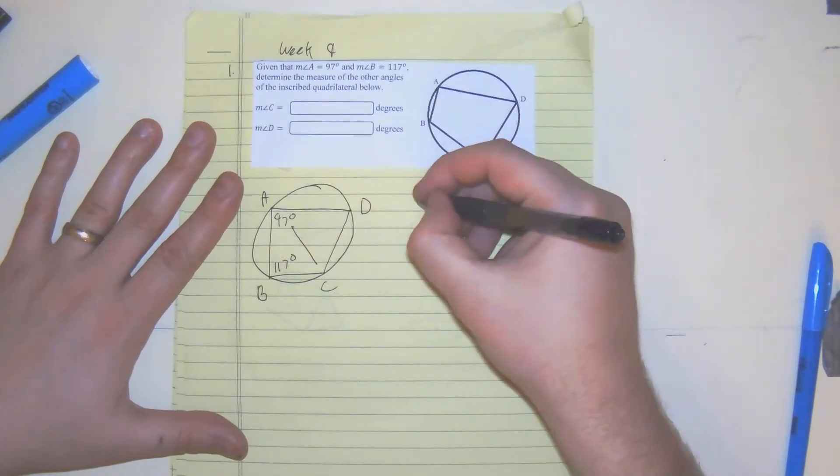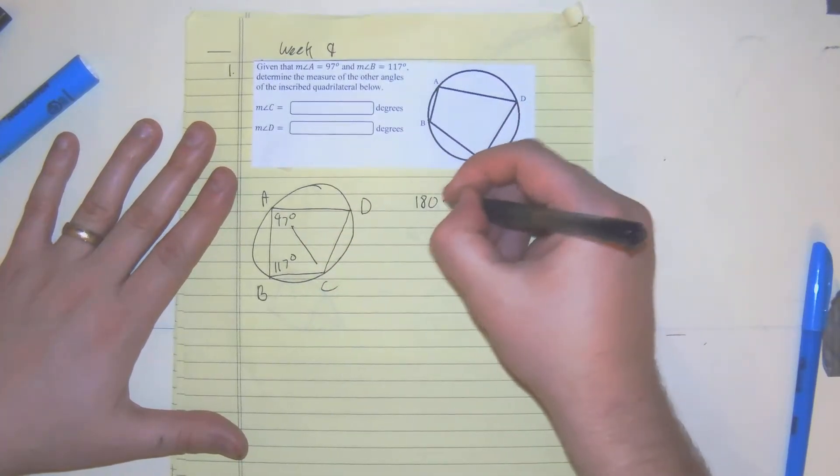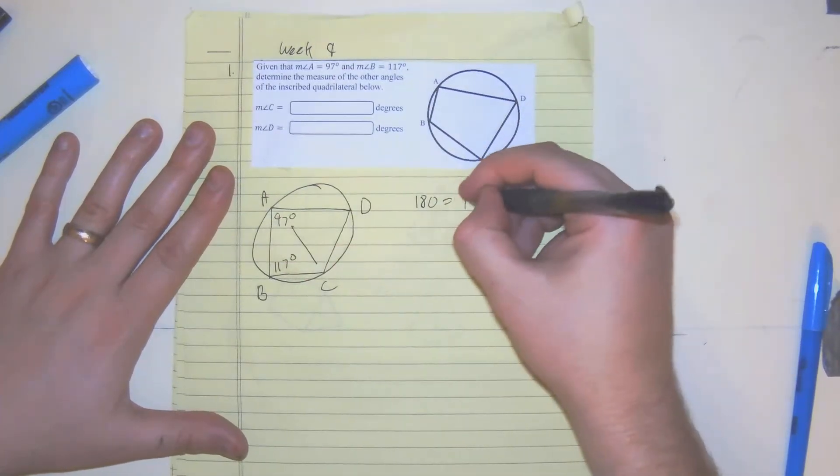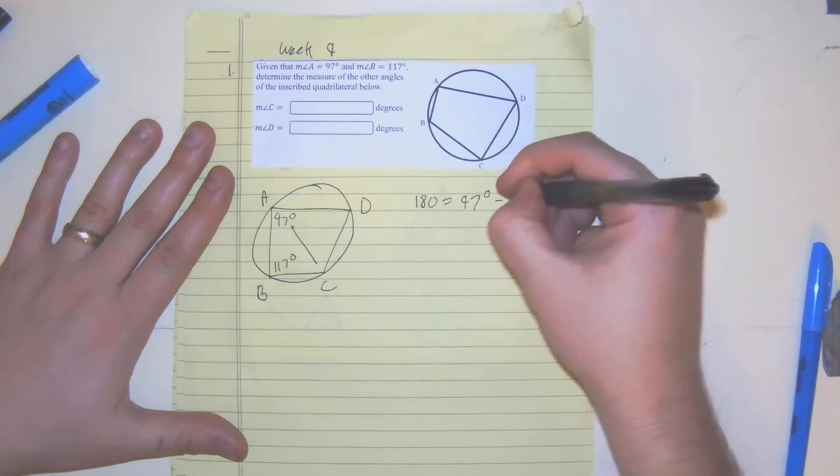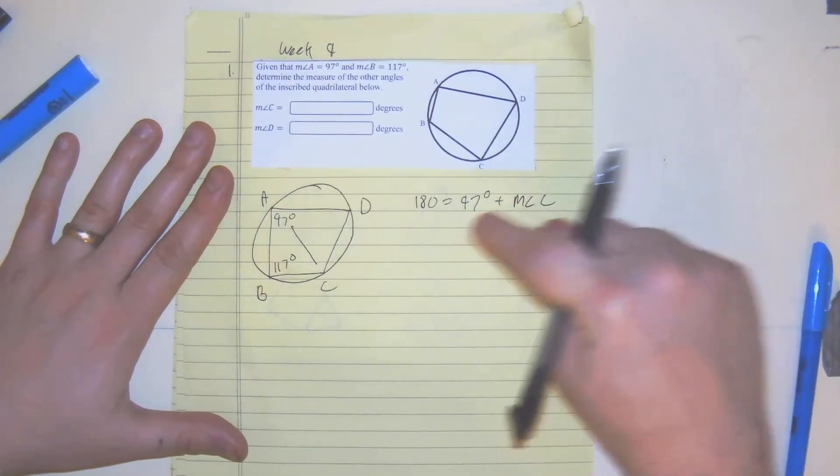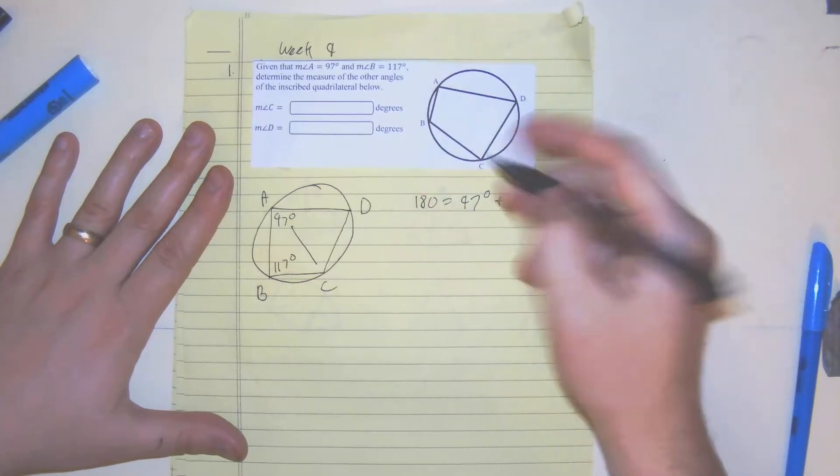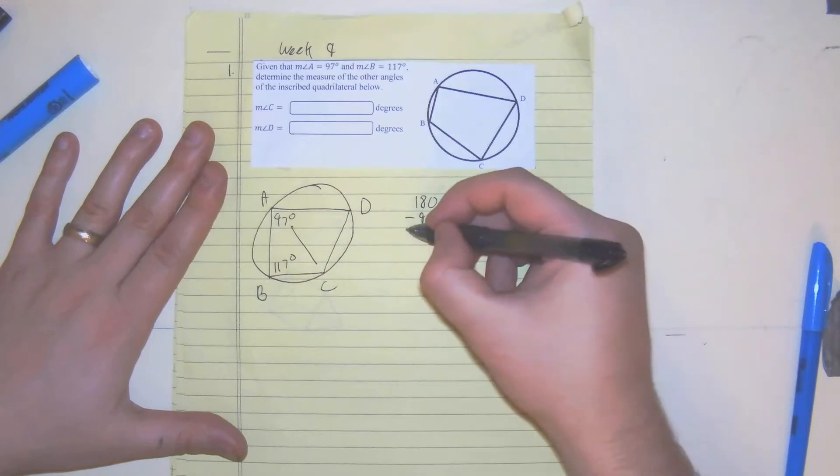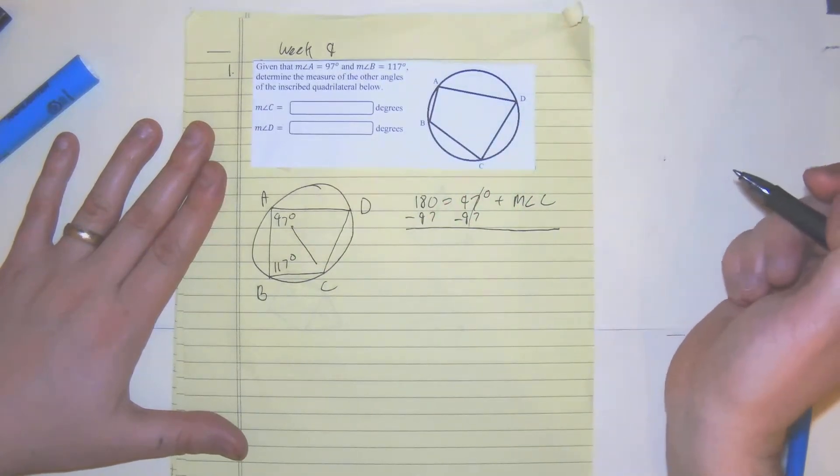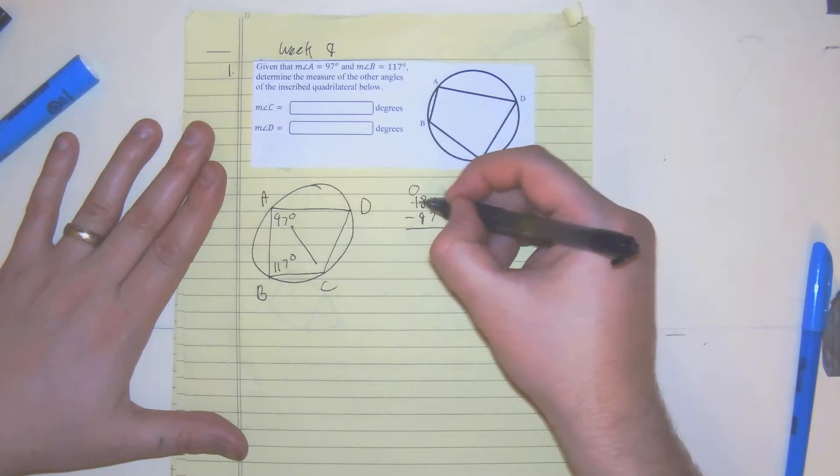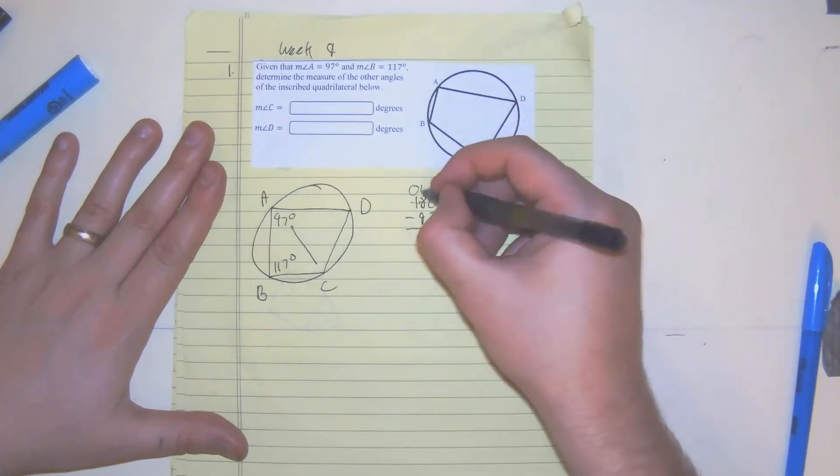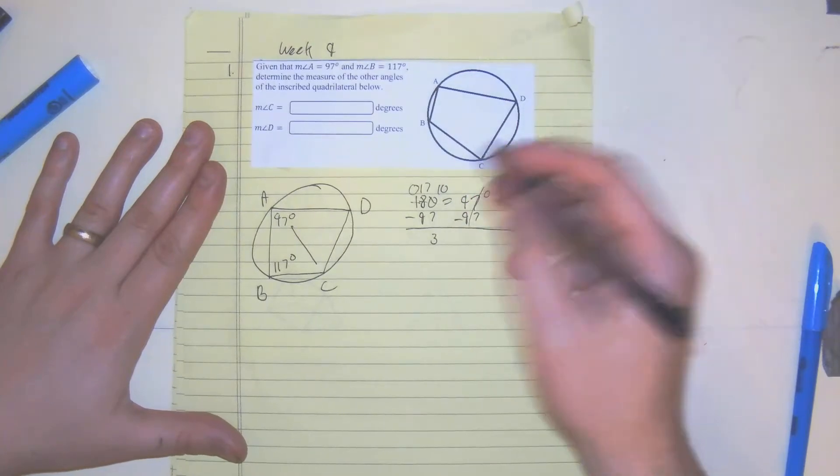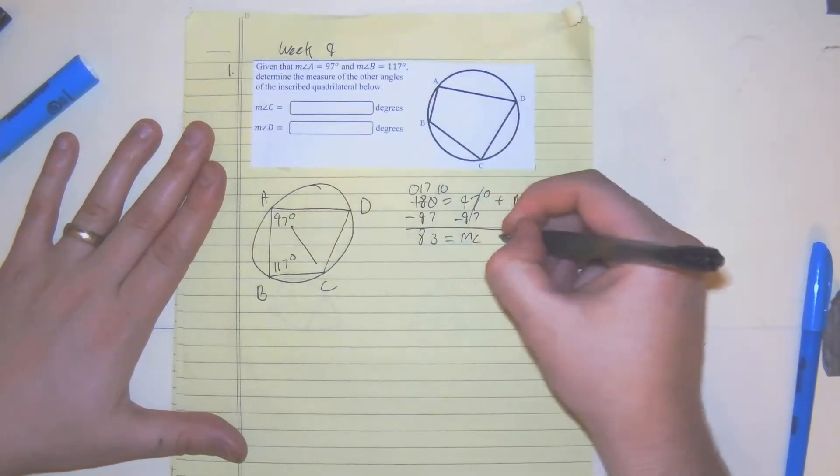So let's find the measure of angle C first. 180 degrees supplementary relationship is equal to 97, angle A, degrees plus the measure of angle C. We don't know what that is, so we need to just subtract 97 by 97. Remember this is non-calculator, so maybe it's best not to do this in your head. 0, 17, 10, 3, and then 8. So 83 equals the measure of angle C.